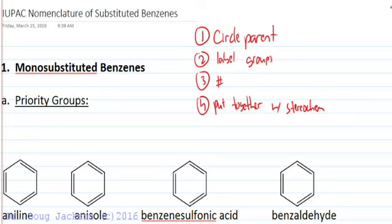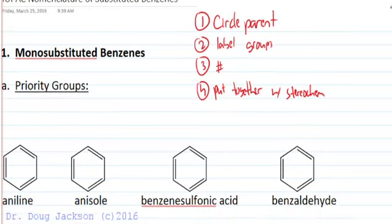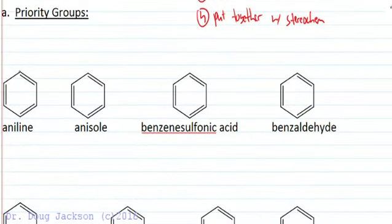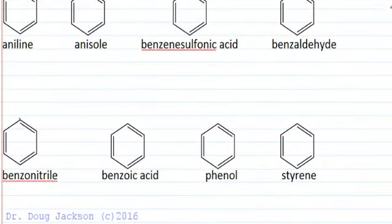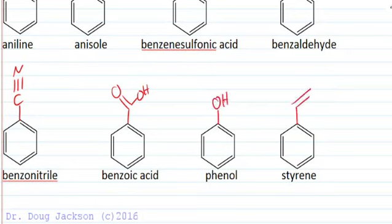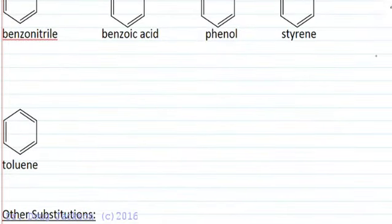With monosubstituted benzenes, one substituent, there's a few compounds we just have to learn the name of and they're going to be our priority groups for benzene nomenclature. They're going to act like a parent chain. So first aniline here, we have an NH2, anisole is an ether, benzene sulfonic acid, benzaldehyde, benzonitrile, benzoic acid, phenol, and styrene. Also toluene is one that we're going to learn for the monosubstituted benzenes. These are just going to be named as parents.